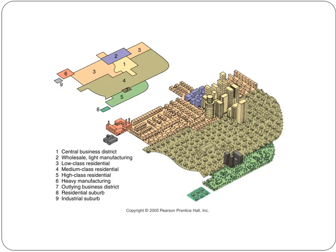In this model, different nodes attract people of different means. The university attracts people who work or study there. The new VA hospital, Nemours Hospital, and Research Parkway attract a different type of person than those living near UCF or near the attractions. The multiple nuclei model is not centered solely on the CBD the way the other two models are — the CBD is still there, but other nodes of importance exist throughout the urban landscape.